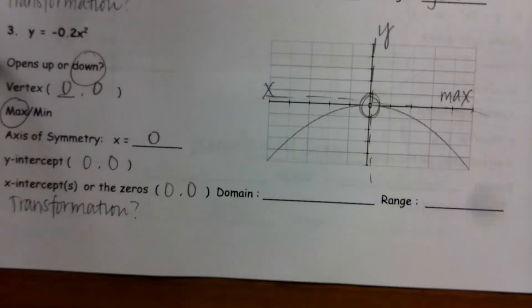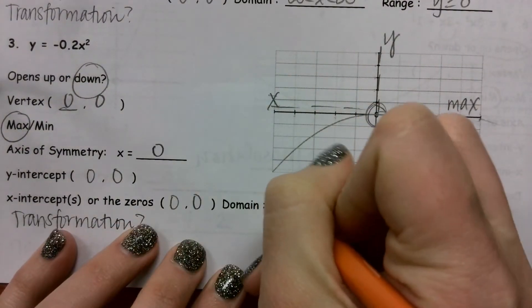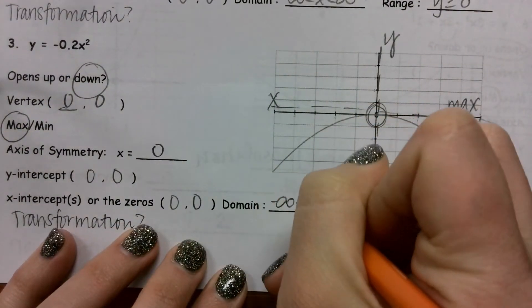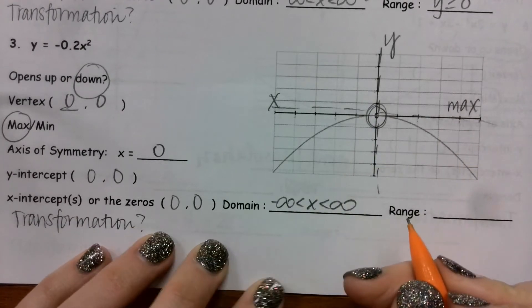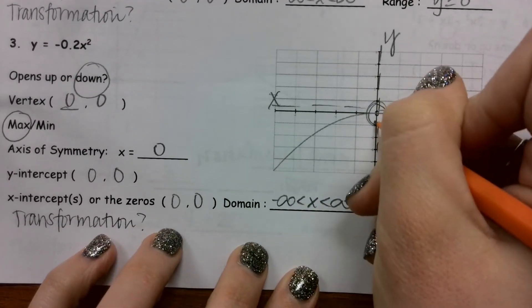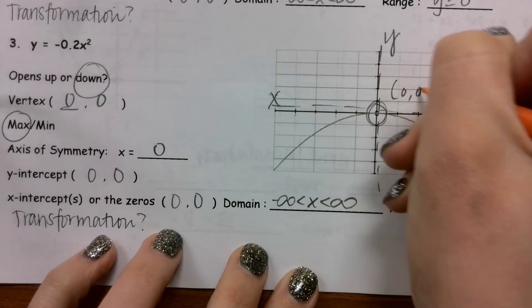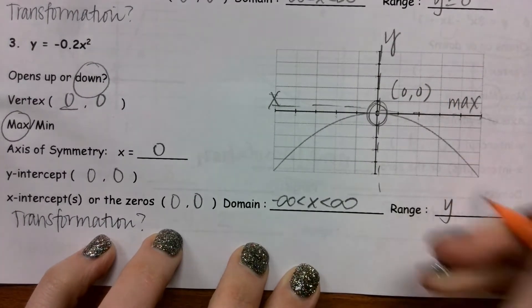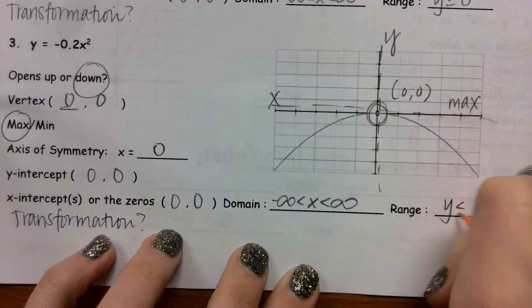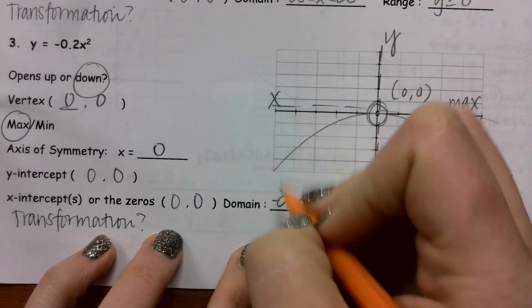Question number three changes. The domain is the same; it's the range that changes. Because the parabola opens down and the y value of the vertex is zero comma zero, y is not going to be greater than or equal to zero. It's going to be less than or equal to zero, since all of the range values are going to be below this vertex point.